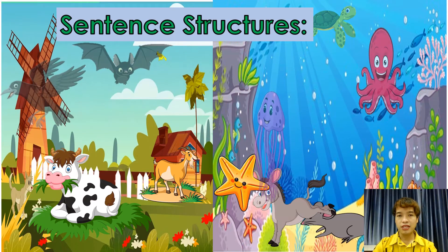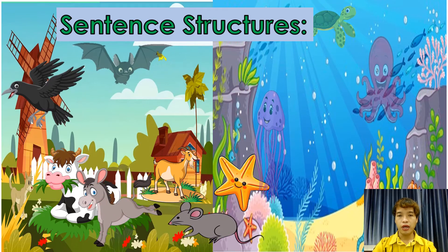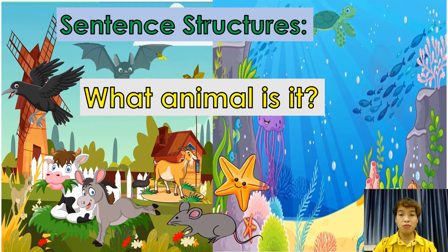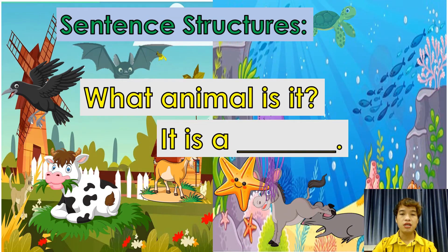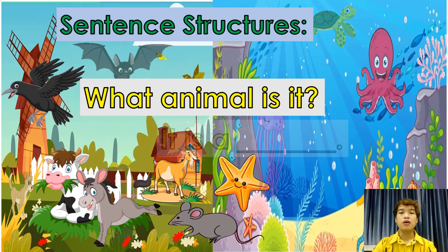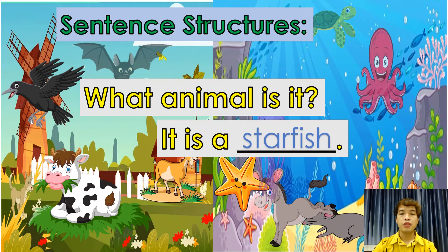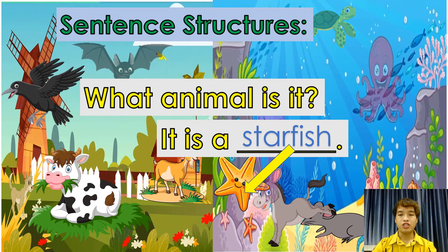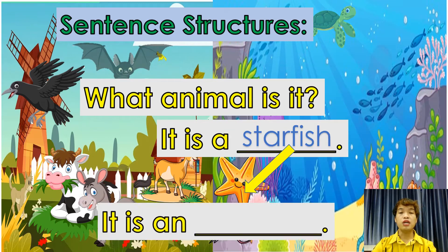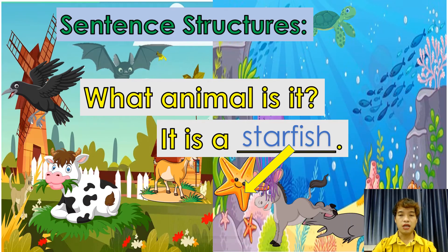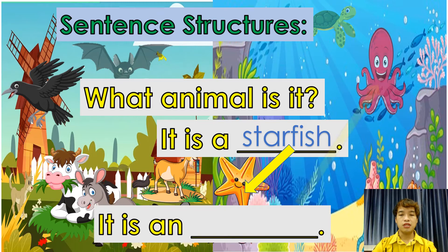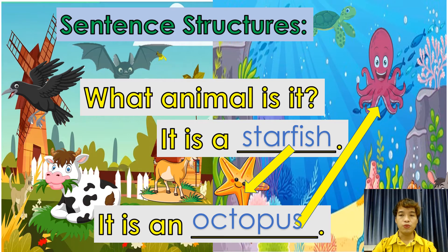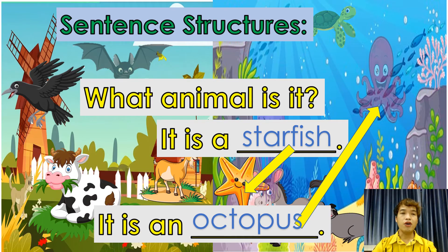Okay students, we have here the sentence structures. The question is: what animal is it? Okay, the answer is: it is a — for example, it is a starfish. And another answer: it is an octopus. Okay, it is an octopus. Now let's get started.